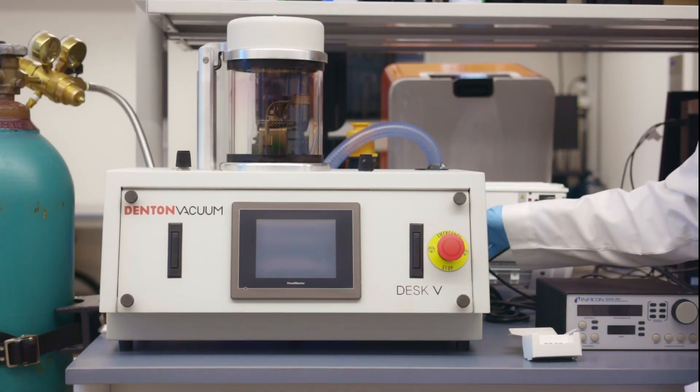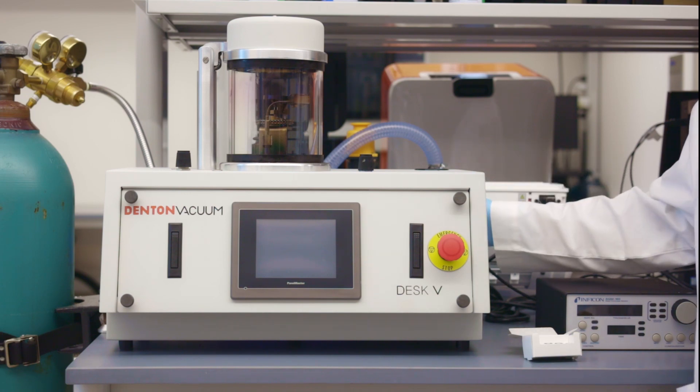Now power on the sputter coater by toggling the power switch on the back of the sputter coater.